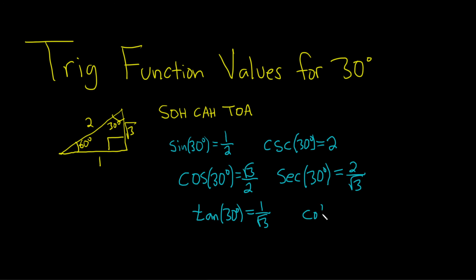And then cotangent of 30 degrees just requires that we flip it. So cotangent equals square root of 3. And that's how you find the trig function values for 30 degrees. I hope this video has been helpful.